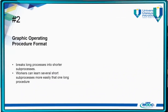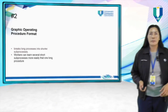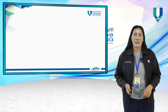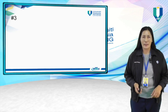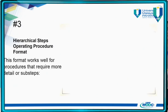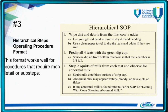The next format is the graphic operating procedure format. This format is used for processes or procedures which involve different stages, such as before, during, and after — or stage one, stage two, stage three. Looking at the example, it is a format which involves four stages. Format three is the hierarchical steps operating procedure format. You use this format for steps which involve many sub-steps under the main steps. It goes according to hierarchy: main step, sub-step, sub-step, sub-step. You can see in the example the main step and then sub-step A, sub-step B.